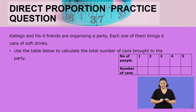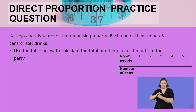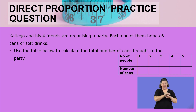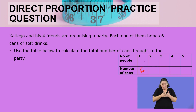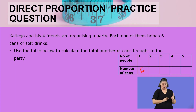Let us take the second example. Gartelero and his four friends are organizing a party. Each one of them brings six cans of soft drinks. Use the table below to calculate the total number of cans to be brought to the party. Because there are four friends, each bringing six, if it is Gartelero only, he brings six. We will now use the method of addition. If Gartelero is joined by another friend who brings six, we will have 12 cans.